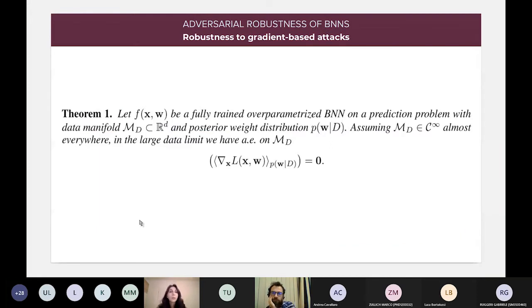Okay. So, this is the main contribution in our work. And I was planning on giving a very broad sketch of the proof, but I think it would be too technical, so let me just explain this theorem in general. We have a fully trained overparameterized Bayesian neural network on a prediction problem with a certain data manifold, which is called MD, and is embedded in the RD space. And then we have our posterior weight distribution, PWD. Now, if we assume that this manifold is almost everywhere smooth, then in the large data limit, the expected loss gradients vanish on this manifold.